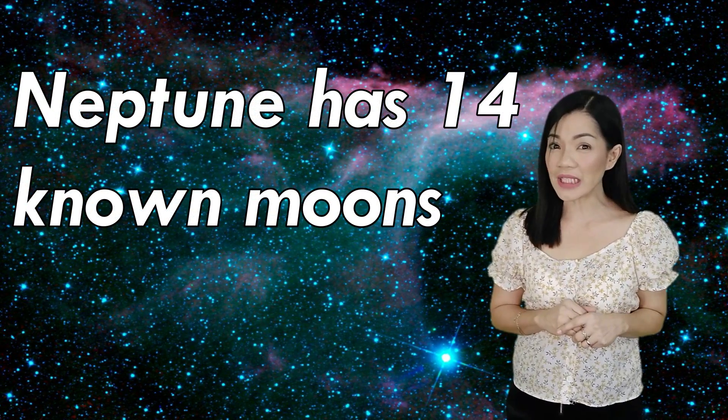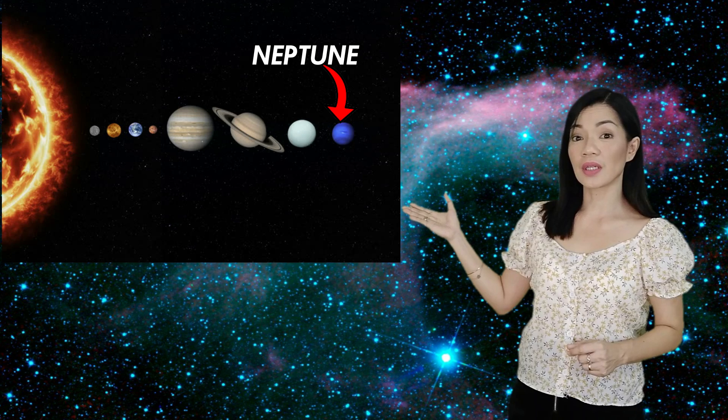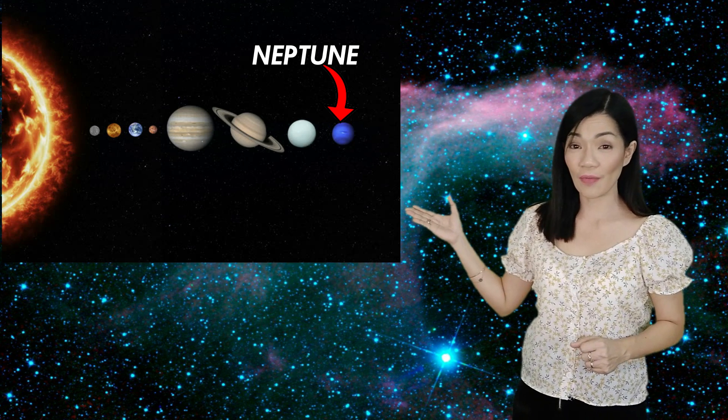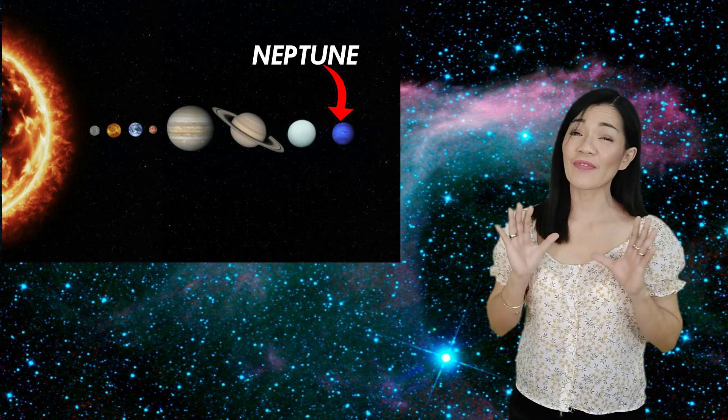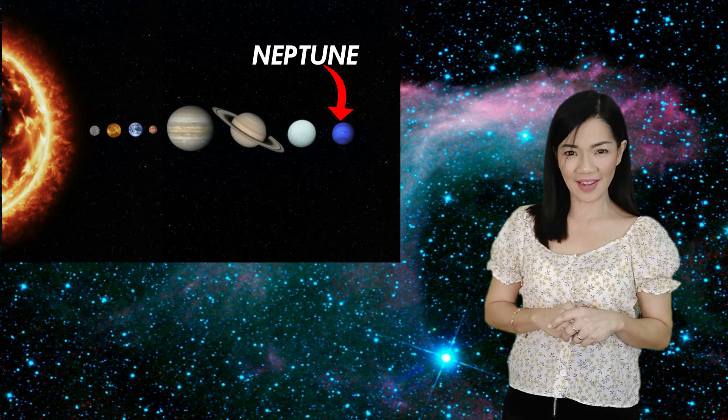Neptune has 14 known moons, but scientists believe that there may be more. Here is Neptune, the farthest planet from the Sun. It is the coldest planet as it is very far from the Sun. Its time to rotate around the Sun is also the longest. Imagine, it takes 165 years to rotate around the Sun.